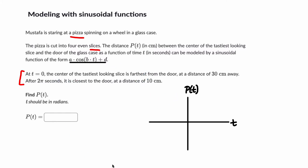So, at zero seconds, we're furthest from the door. That's 30 centimeters away. So there's got to be some point here. It's our maximum point. And at zero seconds, the pizza is 30 centimeters away.